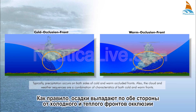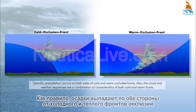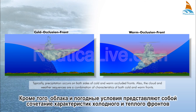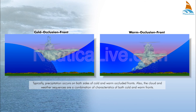Typically, precipitation occurs on both sides of cold and warm occluded fronts. Also, the cloud and weather sequences are a combination of characteristics of both cold and warm fronts.